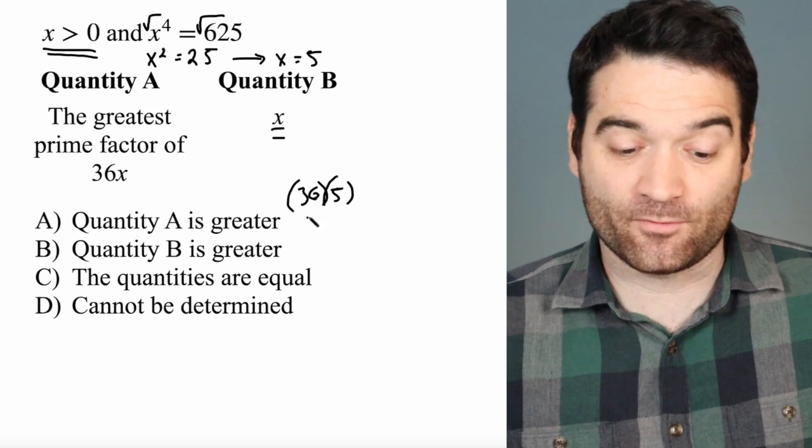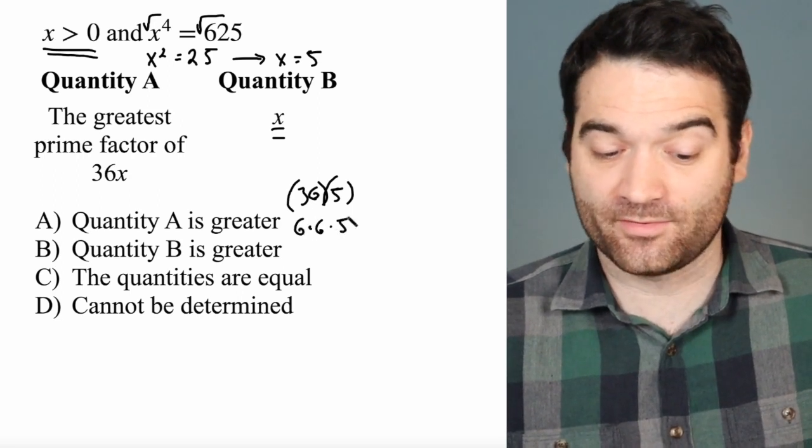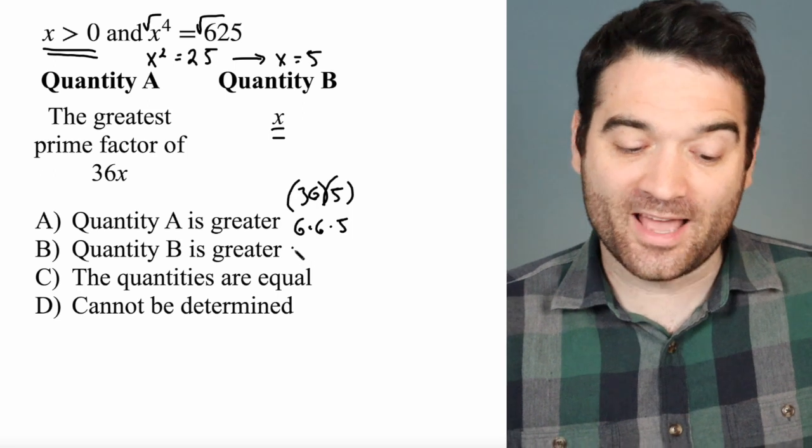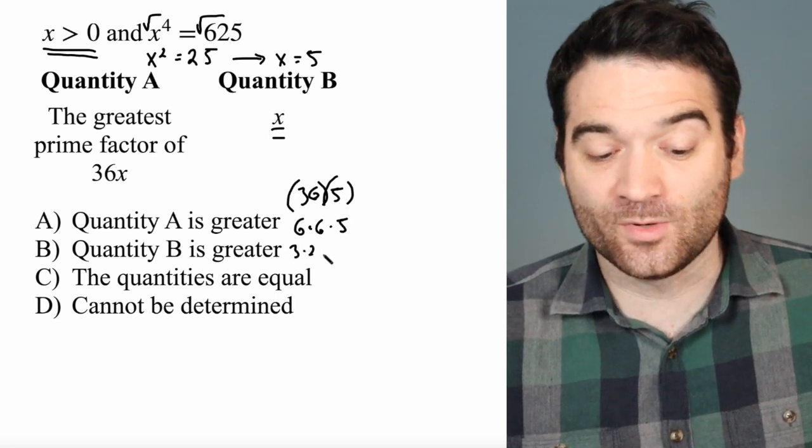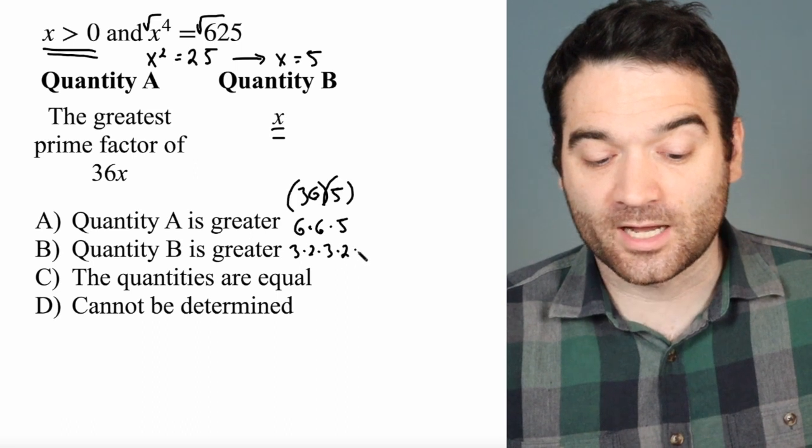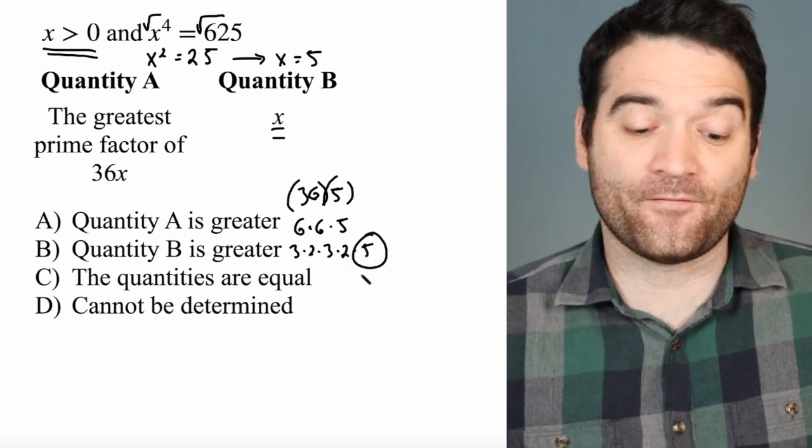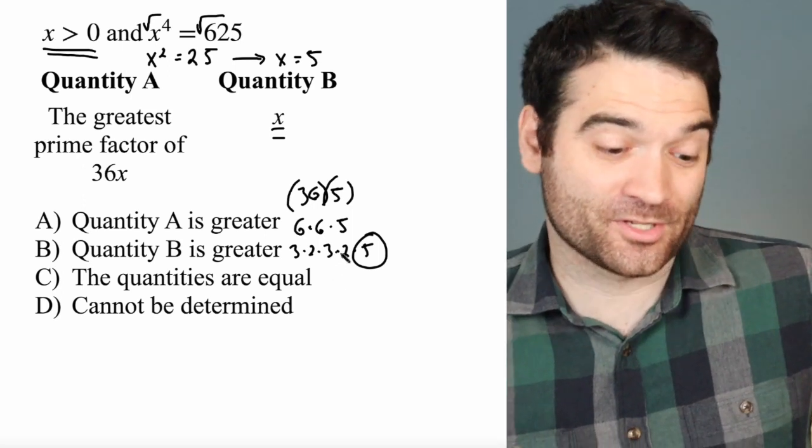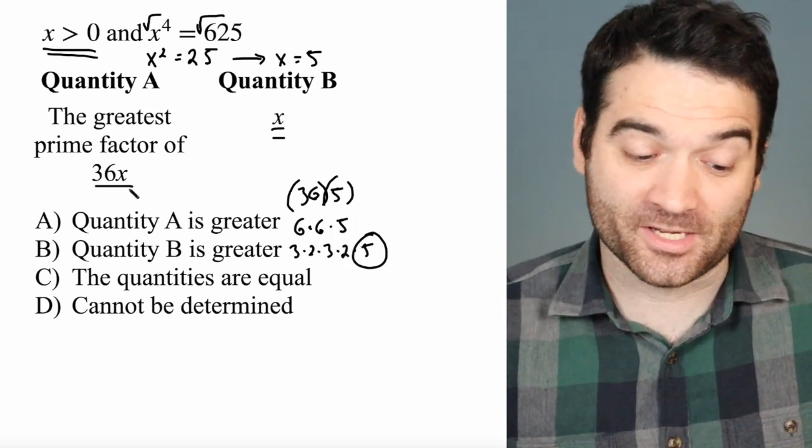If I break it down further, this is 6 times 6 times 5. 36 is 6 times 6. And if I break that down further, it's 3 times 2 times 3 times 2 times 5.